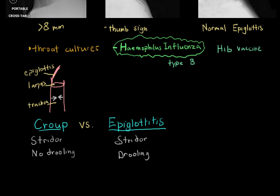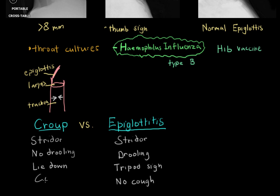Another major difference: in epiglottitis, patients have the tripod sign — they're sitting up straight and can't lie down. Whereas with croup, they can actually lie down without any issues. And finally, in epiglottitis there's no cough because there are no cough receptors being stimulated — the epiglottis doesn't have any cough receptors. Whereas when you touch the larynx or the trachea, it can very strongly stimulate cough; in fact, you get what's known as a barking cough.